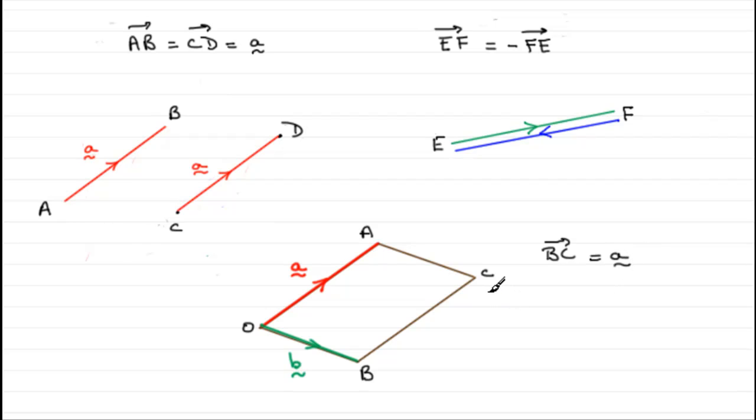And if I was looking at, say, CA, what would that be? Well, it's parallel to the side OB but it's going in the opposite direction to OB. So it would be minus b.